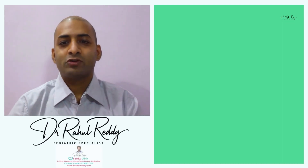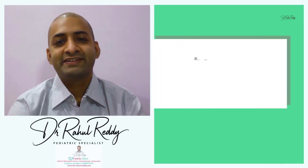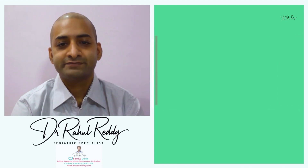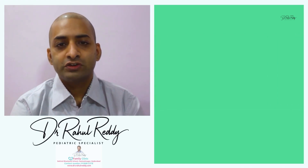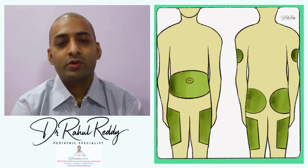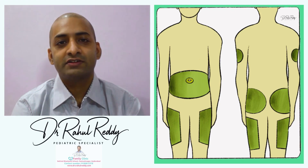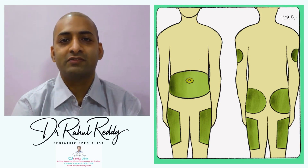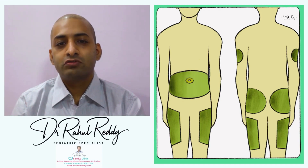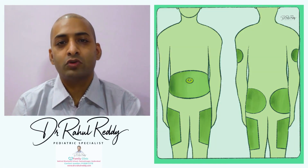Hello everyone, I'm Dr. Rahul Reddy, and today I'll be talking to you about how to rotate insulin injection sites. Insulin injections can be given in four areas of the body: one is the abdomen, second is the thigh, third is the upper arms, and fourth is the buttocks. I'll be showing you with these diagrams how your insulin injection sites can be rotated.